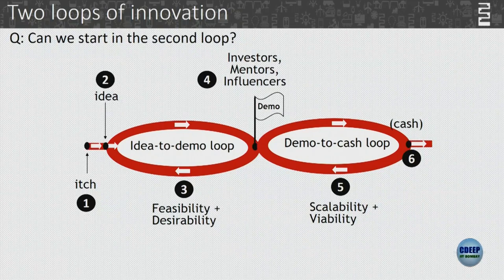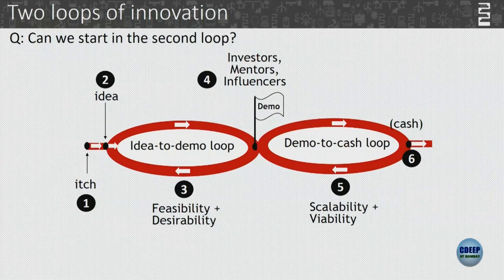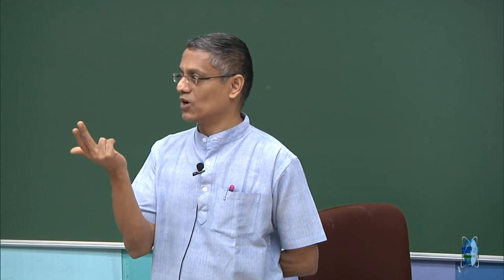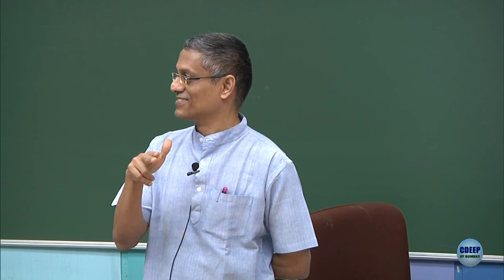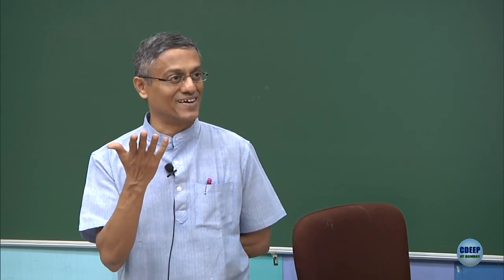They can take an existing product and show: look, I am going to make something like this. For example, the dating app Bumble — the lady who started it was a VP of marketing at Tinder first, and she came out and said, we're going to do almost the same thing except that only a woman can start the dating request.